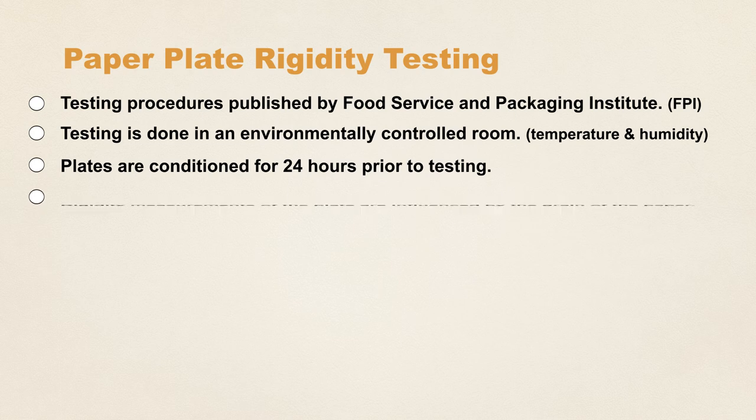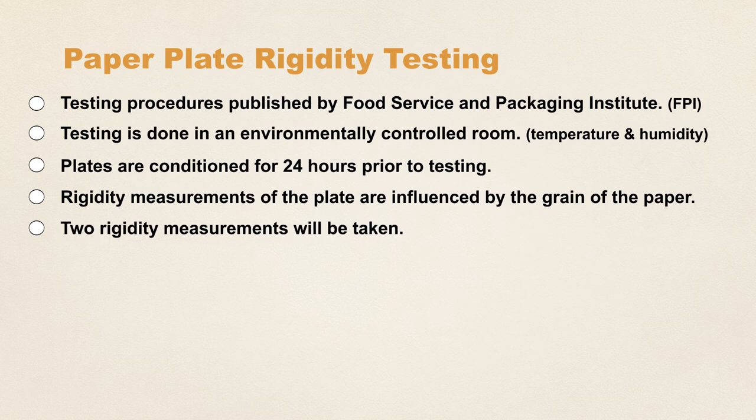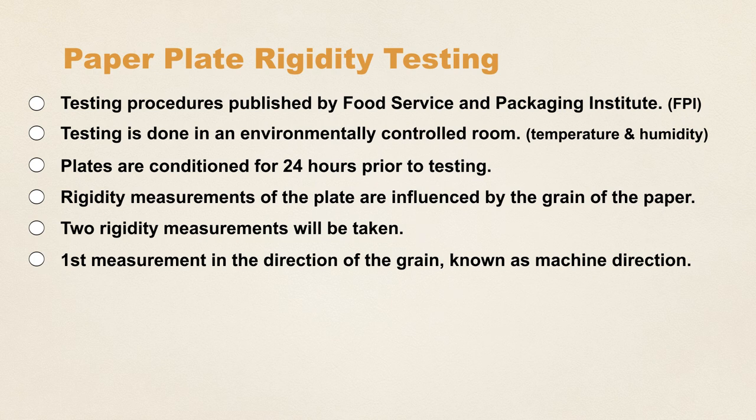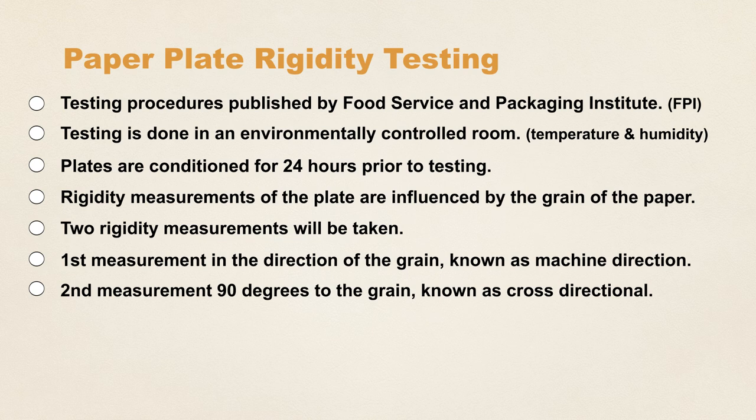Since the rigidity measurement of the plate will be influenced by the grain of the paper, two rigidity measurements will be taken. One in the direction of the grain, known as the machine direction, and one measurement 90 degrees to the grain, known as cross-directional. The rigidity of the plate is stated as an average of the two readings.